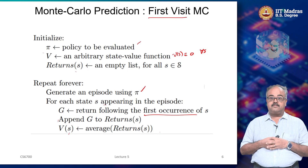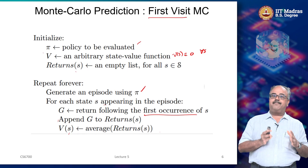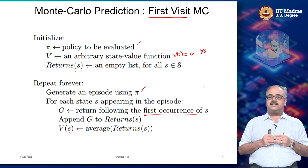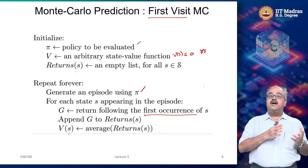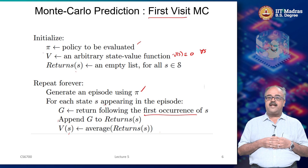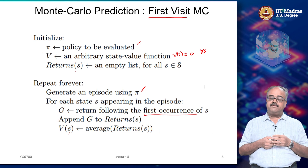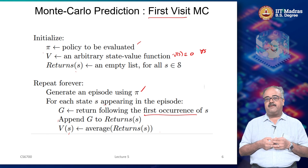We looked at our first sampling-based method: Monte Carlo algorithms, where we did not have knowledge of the transition dynamics and the reward, and we actually estimated the value function by sampling trajectories from the MDP.